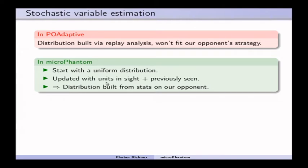And then, we update this distribution to make it not uniform anymore, with enemy units that are currently in our sight range, plus enemy units that we saw previously, with a weight to favor units that we are currently seeing. And so, now our distribution is built from statistics on our current opponents.